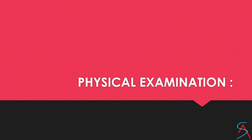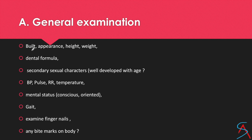Physical examination is more important. You have to check the person's build, appearance, height, and weight. Look at the dental formula, because if she bit the accused, and the accused comes for examination, you can correlate bite marks. Look at the secondary sexual characteristics to cross-check the stated age. Check the vitals and mental status. Look at the gait, because if there is any pain, the gait would be changed.